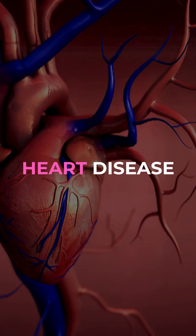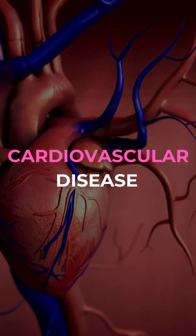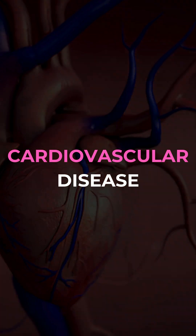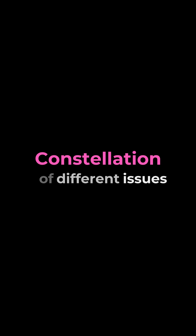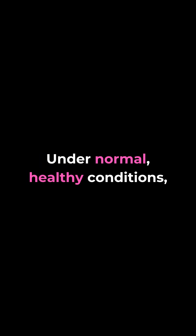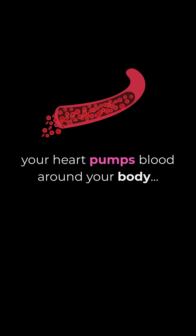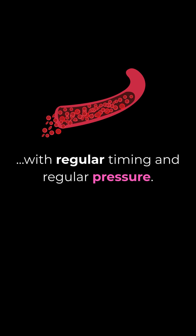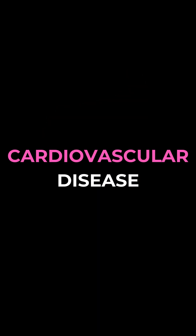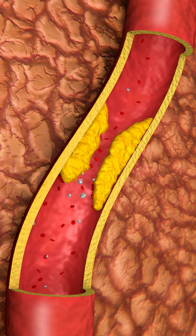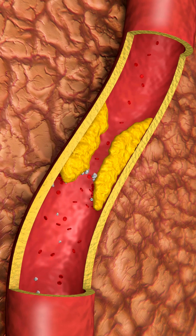When we talk about heart disease or cardiovascular disease, we're actually talking about a constellation of different issues. Under normal, healthy conditions, your heart pumps blood around your body with regular timing and regular pressure. In cardiovascular disease, the system starts to break down. Arteries may become stiff or clogged with plaque, and this can disrupt blood flow.